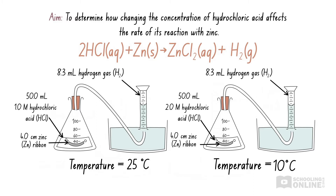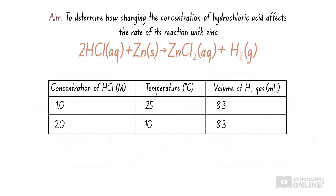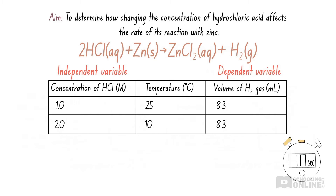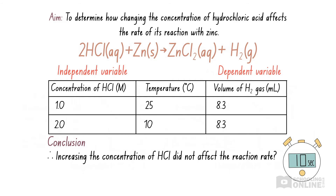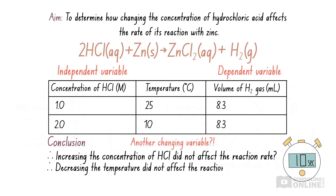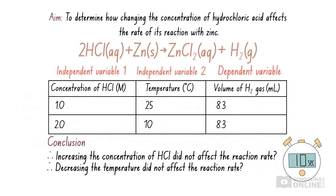We then repeat the experiment using 2 molar hydrochloric acid at 10 degrees Celsius, and find that the volume of gas produced is the same. In this experiment, we are changing the concentration of hydrochloric acid as the independent variable, and our dependent variable is the volume of hydrogen gas produced in 10 seconds. When interpreting the results, we could say that increasing concentration did not affect reaction rate — but we could also say that decreasing the temperature did not affect reaction rate. Since we have two independent variables, we cannot determine how changing each one affects the results. Hence, we cannot make a valid conclusion.